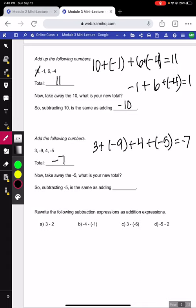Now we're going to take away the negative 5 and add the other three numbers. So if I add 3 plus negative 9 plus 4, I get negative 2. So subtracting a negative 5 or taking away that negative 5 was the same as adding a positive 5.